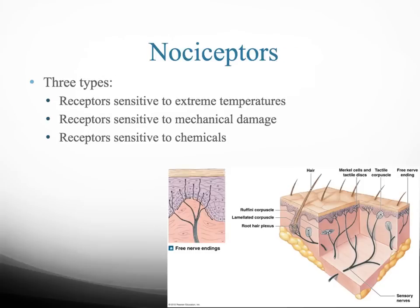The first type we're going to talk about are the nociceptors. We have three different types: receptors sensitive to extreme temperatures, receptors sensitive to mechanical damage, and receptors sensitive to chemicals. All these categories — extreme temperature, mechanical damage, and chemical sensation — have to do with pain. So nociceptors are also known as your pain receptors.